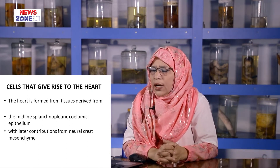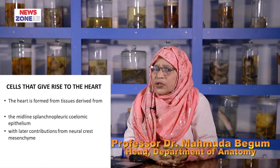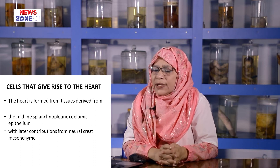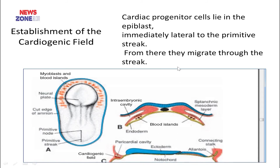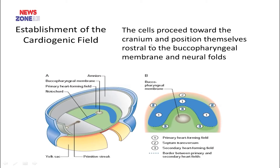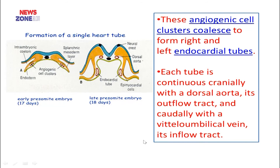What cells are responsible for heart tube formation? Two tissues: first, the midline splanchnopleuric mesenchyme of the lateral plate mesoderm; and second, some contribution from the neural crest mesenchyme. These cardiogenic progenitor cells first appear in the lateral side of the primitive streak, then migrate through the streak towards the cephalic region, ultimately reaching rostral to the buccopharyngeal membrane and the neural fold. These angiogenic cell clusters are located in the cardiogenic plate and gradually coalesce to form right and left endocardial tubes.